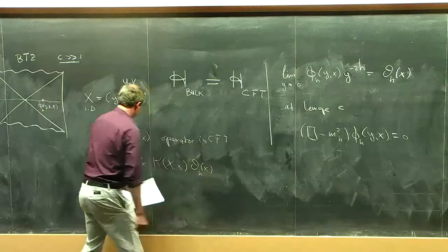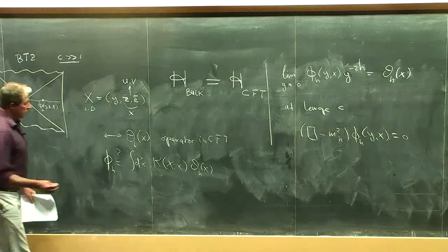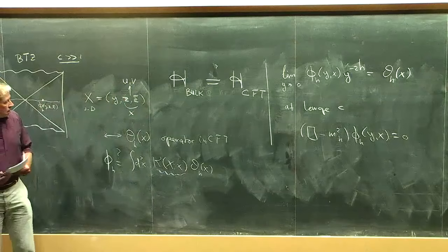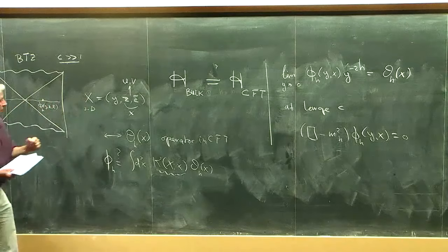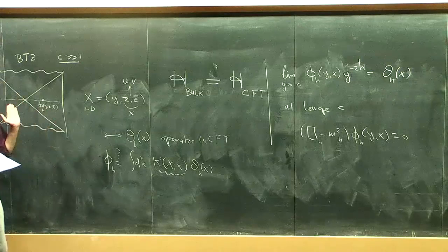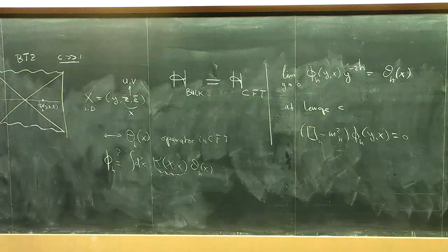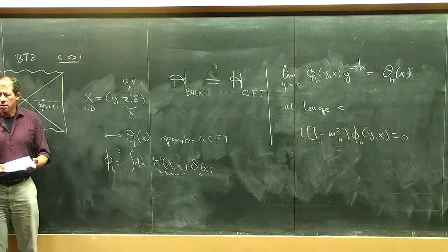But I want to criticize this formula. This K is a c-number — it satisfies the equation in the bulk with appropriate boundary conditions using Green's theorem. But this wave operator depends on the specific background, so this thing is background-dependent. It explicitly makes use of a bulk geometry. I would not call this an intrinsic definition of a bulk operator.